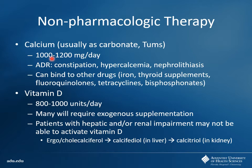Vitamin D is the other big component — this is the non-activated form. If they have a healthy liver and healthy kidneys, they can produce it themselves. Here in Florida, getting outside helps them produce their own vitamin D, but often we have to supplement. A lot of milk is fortified with vitamin D. Usually 800–1,000 units per day is good for these patients. Pharmaceutical products will be either ergocalciferol or cholecalciferol — not active forms. In the liver it turns into calcifediol, and calcitriol is what gets formed in the kidney — the active form. If a patient is on calcitriol, they probably have kidney disease.